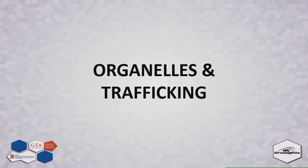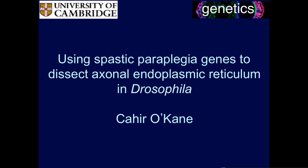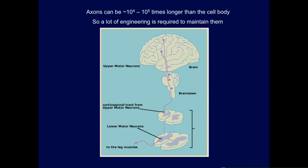Our next speaker will be Kahiro Kane. We're interested in the biology of long axons. Axons can be many orders of magnitude longer than the diameter of the cell body they emanate from. It's a bit like if the cell body was the diameter of this lecture theater, the axon could go all the way to perhaps New Orleans or Nashville or Virginia. So that requires a lot of engineering to keep it maintained in good working order.